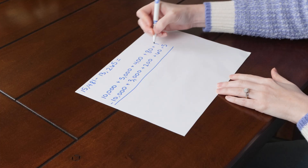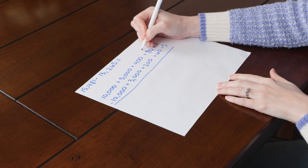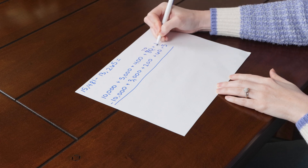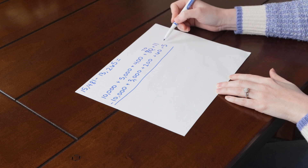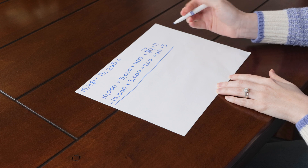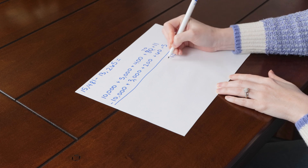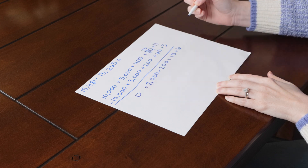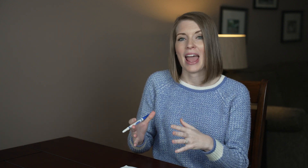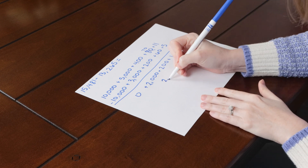Now if you run into an instance where you need borrowing, you're going to do it very similarly to the way that you would if you were solving using standard form. So in this case, I cannot subtract 5 from 1, so I'm going to borrow from the next place value. This will change to 70, and then I'm going to put a 1 in front of the number. Now I'll just go ahead and subtract each place value. After you have subtracted by each place value, we want to go back from expanded form to standard form, so we're just going to add each of those place values together. And that was how we used expanded form to subtract.